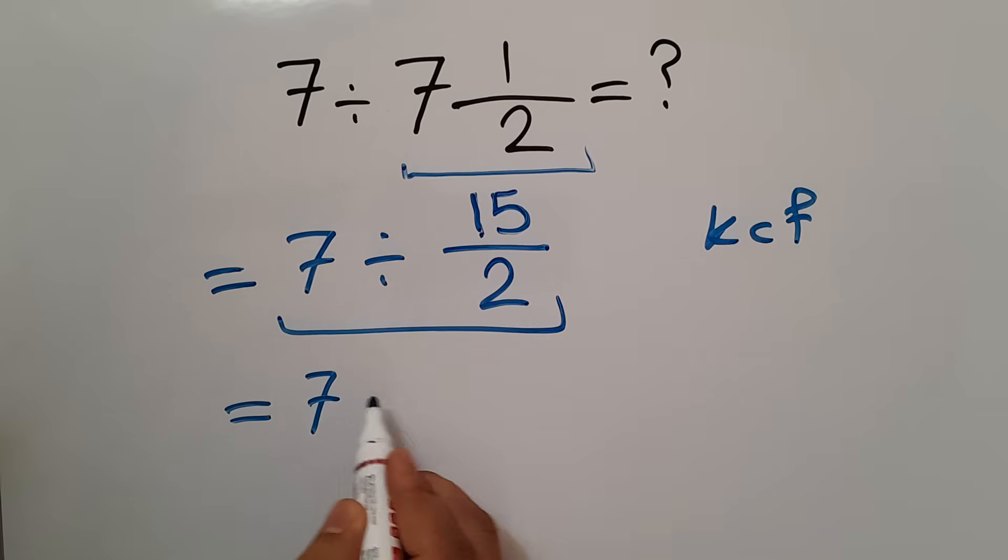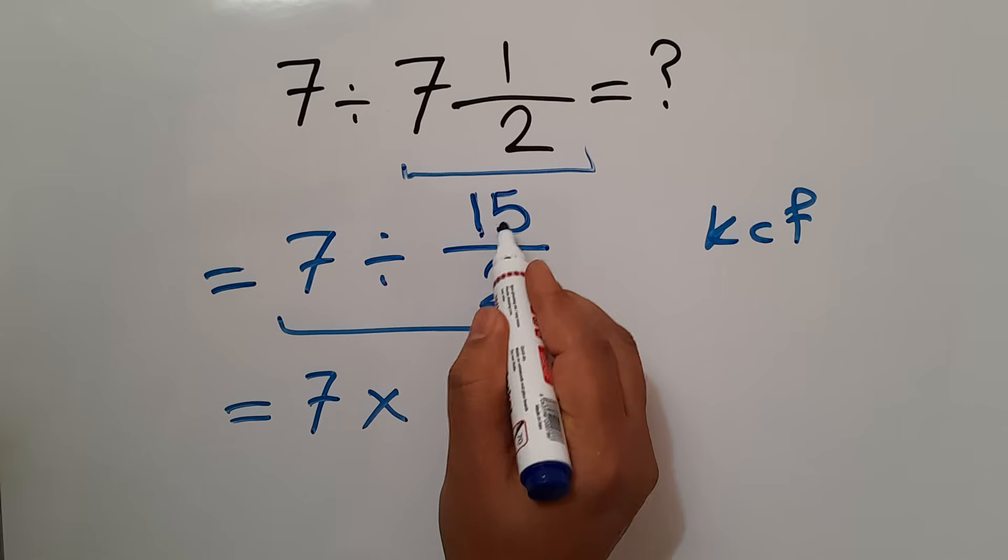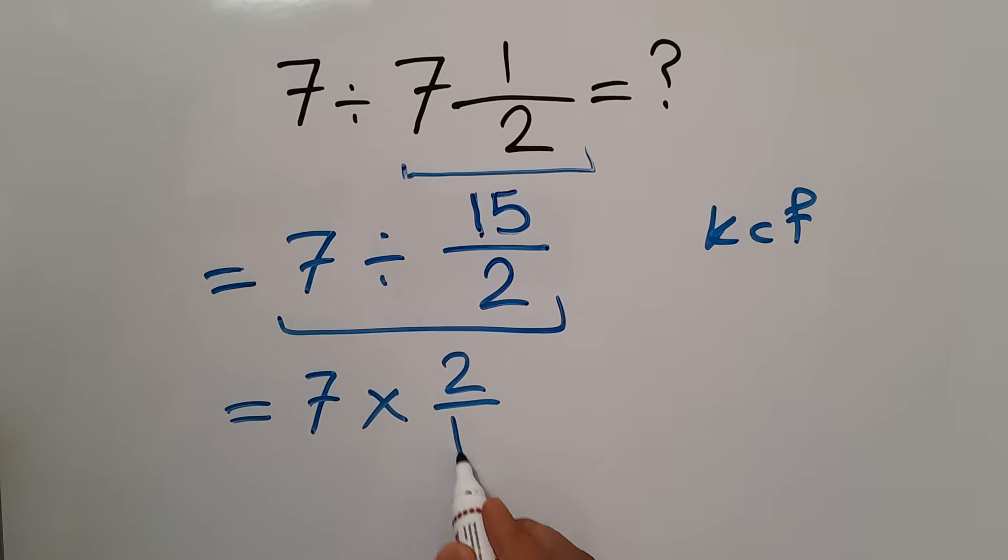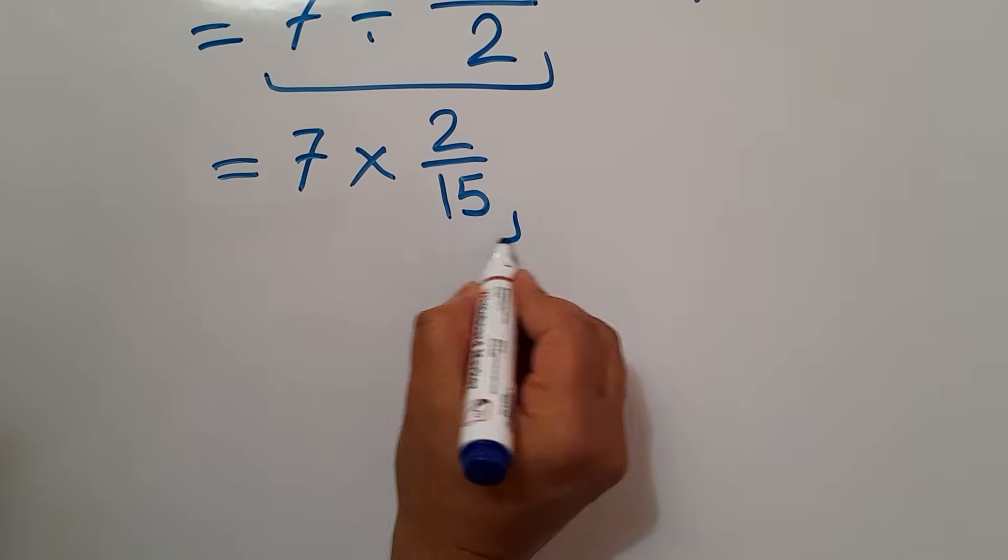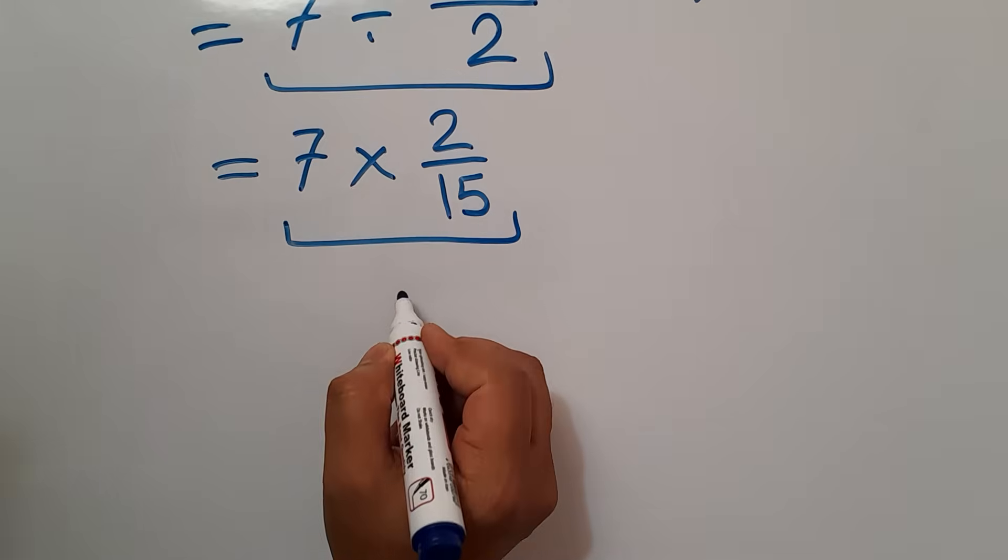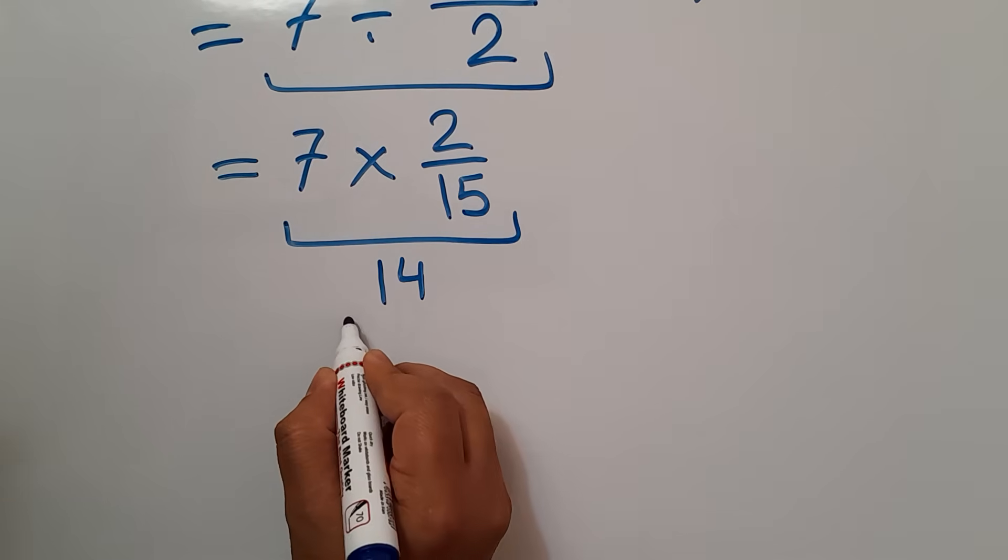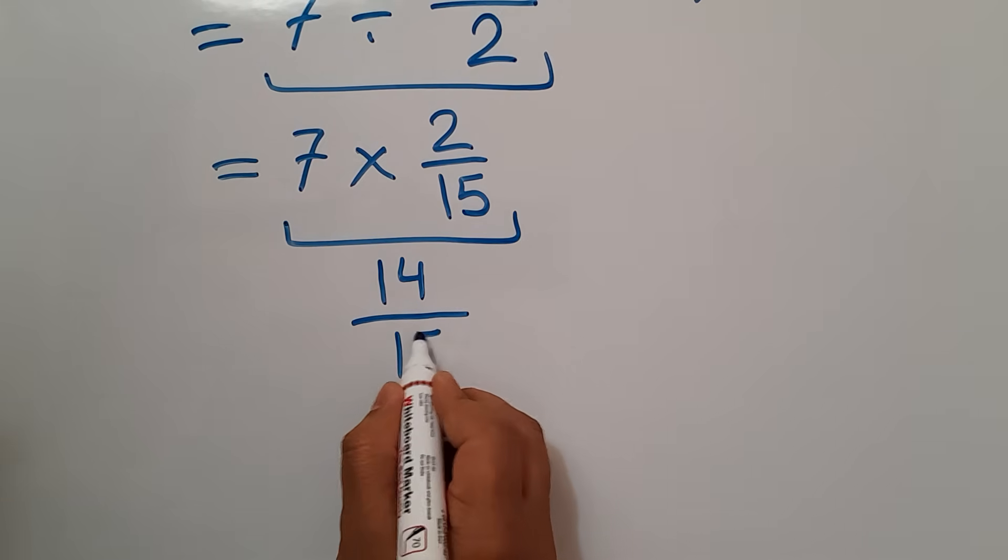So, we can write 7 times 2 over 15, and this is equal to 7 times 2 equals 14, and 14 over 15.